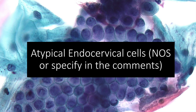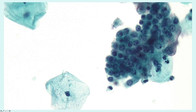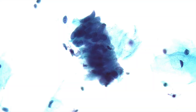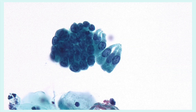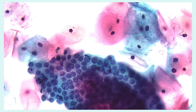Atypical endocervical cells occur in sheets and strips with some cell crowding, nuclear overlap, and/or pseudostratification. Cytoplasm is still abundant but the nuclear-to-cytoplasmic ratios are increased. You can have nuclear hyperchromasia, mild chromatin irregularity, and still distinct cell borders. In liquid-based preparations, groups are more rounded and more three-dimensional. You can have variation in nuclear size and shape, nuclear enlargement up to three to five times the size of a normal endocervical nucleus, occasional nucleoli, and rare mitotic figures.